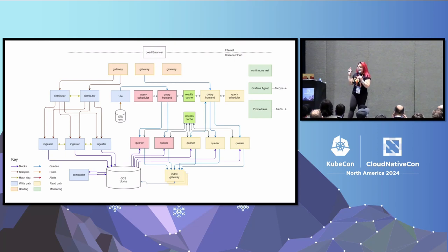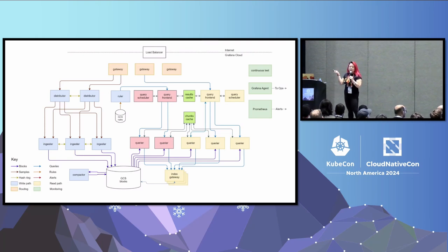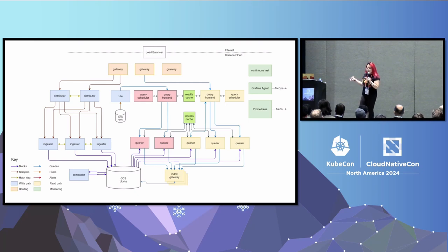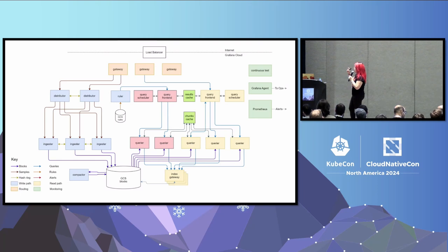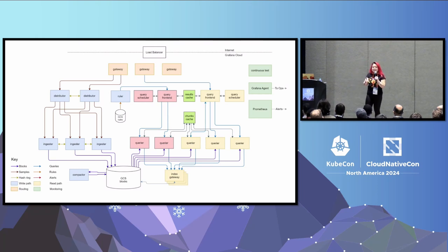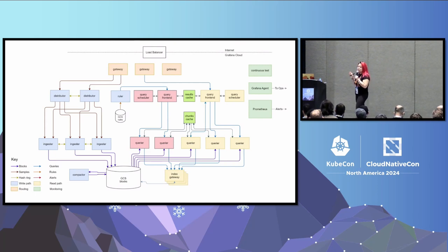For Loki, you can deploy it as a monolith or single binary, or in what we call microservices mode. I would recommend microservices mode if you're running something in production. The cool thing is, if you want to scale it up, you can scale just the component you want — you don't have to duplicate everything else. For example, there's a separation between the distributors and the ingesters. The ingesters take in your data, and the queriers help you find stuff within that data. You could scale one up and not the other.